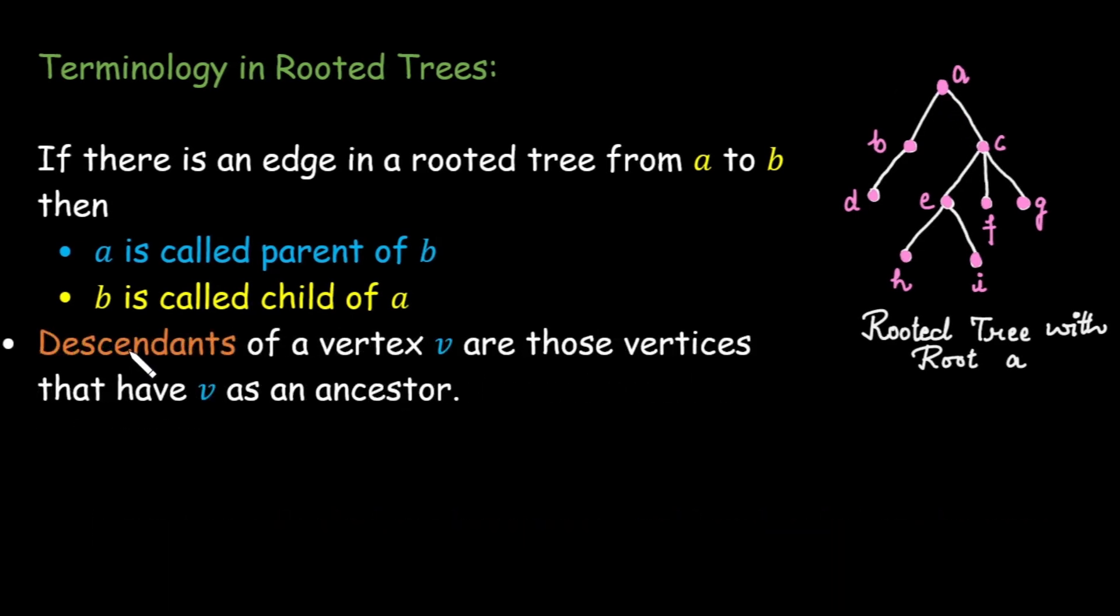Next term we have is descendants. Descendants means we need to find all vertices that have v as an ancestor.